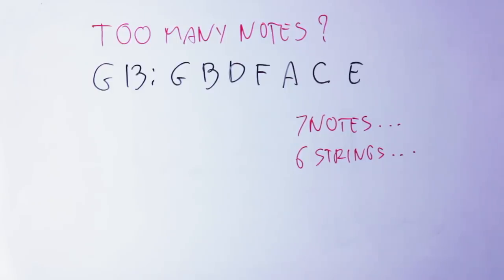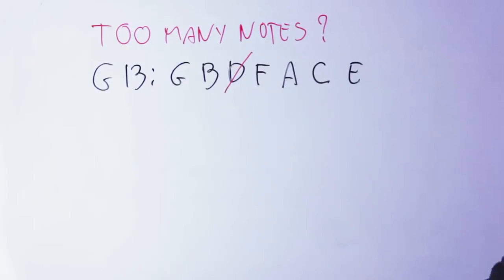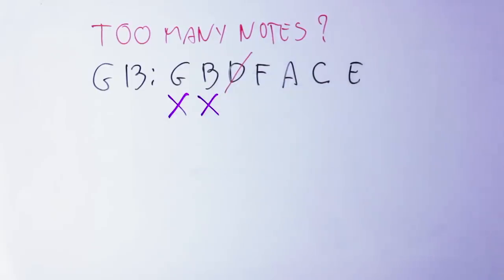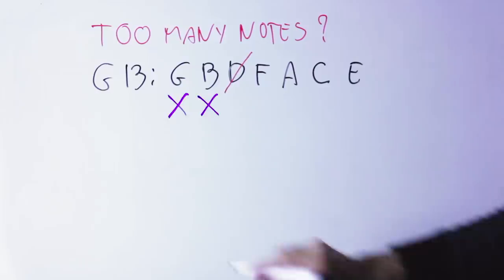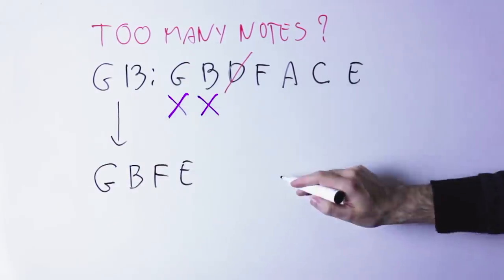but even if you have a seven-string, it's quite hard to play all those notes at the same time. So, what do you do in this case? Well, conventionally what we do is that we start omitting notes, so we choose some notes that we don't play.